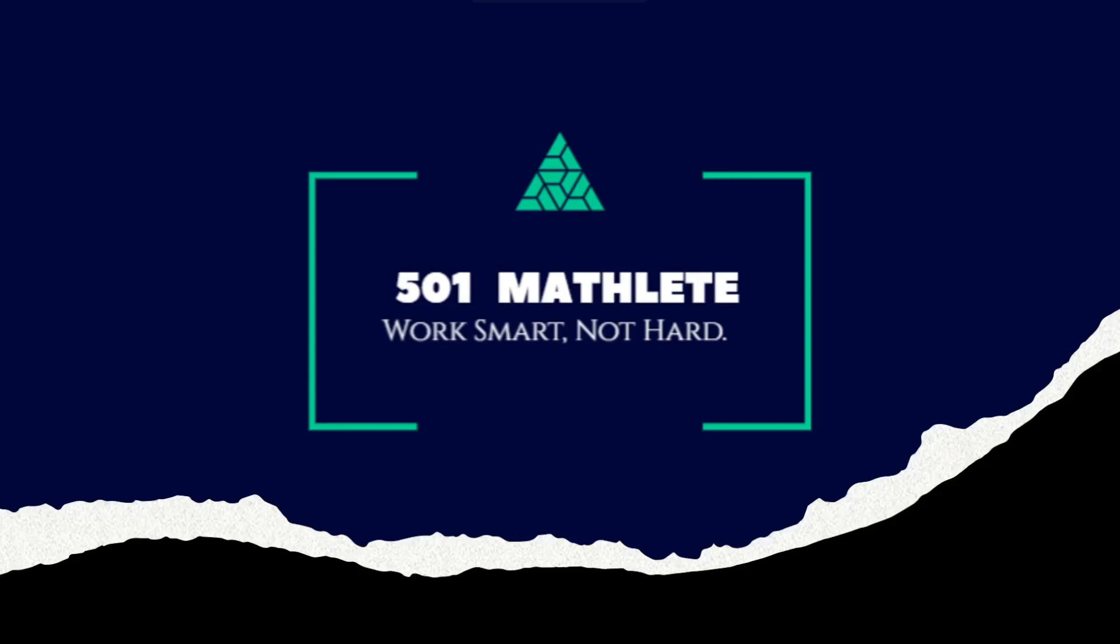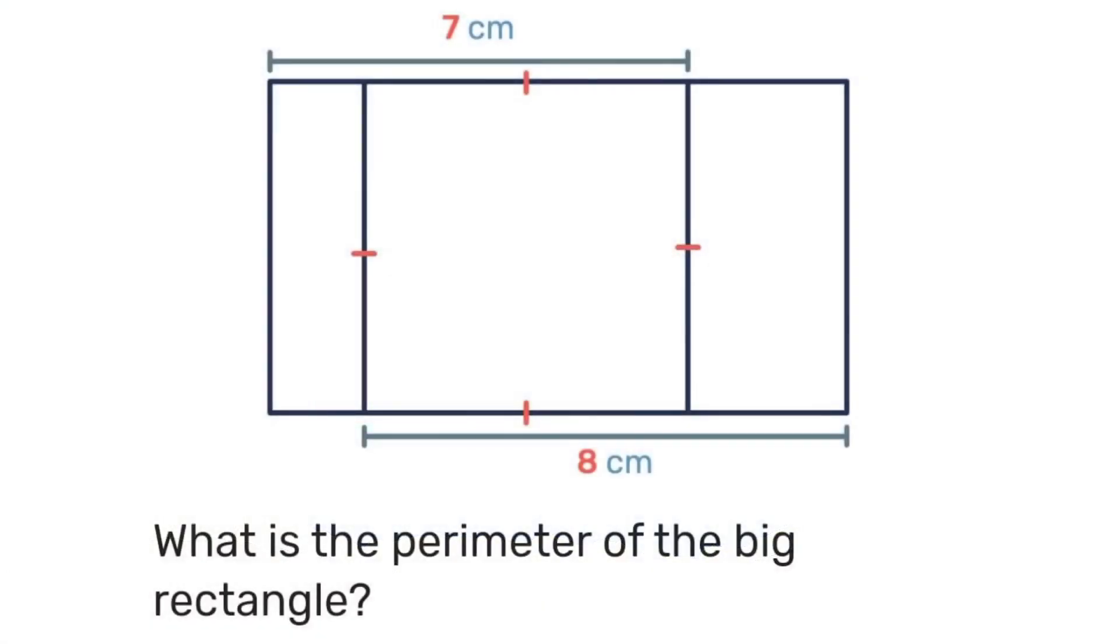Welcome to 501 Mathing where we encourage you to work smart not hard. On today's problem we have this square inside of this rectangle. We're given dimensions of 7 centimeters and 8 centimeters on the top and bottom and we're asked what is the perimeter of the big rectangle.